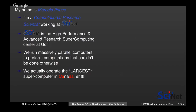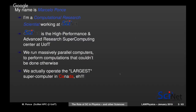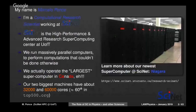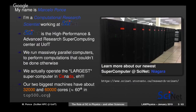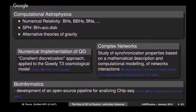A little about myself: my name is Marcelo Ponce, and I work as a computational research scientist at SciNet, which is the supercomputer center at the University of Toronto. Not only can we do research, but we can use the most powerful supercomputers available to researchers in Canada. We have the two largest supercomputers in Canada — the newest one was deployed at the beginning of 2018. Our machines have on the order of 30,000 to 60,000 cores and are ranked at position 60 in the TOP500 chart.